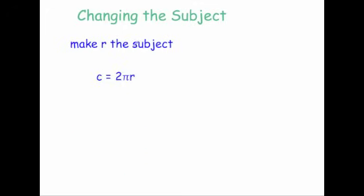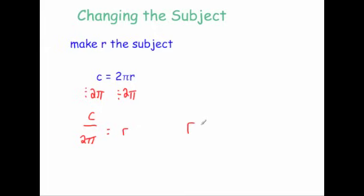Now make r the subject where c equals 2 pi r, which means 2 times pi times r. To get rid of the times by 2 pi we divide both sides by 2 pi. Dividing the left hand side gives c over 2 pi, and dividing the right hand side cancels the times by 2 pi, leaving just r. So r equals c over 2 pi.